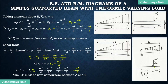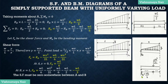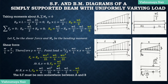Ra is in the upward direction. Any force upward on the left portion is positive, and any force downward is negative. Shear force equals the algebraic sum of forces on the left portion. So Fx equals plus Ra minus WX²/2L. Therefore, Fx equals WL/6 minus WX²/2L, because Ra equals WL/6. At end A, x equals 0, so FA equals WL/6 minus 0, which equals WL/6. Therefore, the shear force at end A equals WL/6.